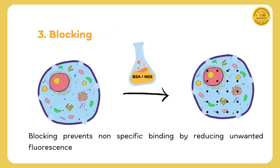Now moving on to blocking. To avoid non-specific binding, we apply a blocking solution containing BSA or normal serum. This step covers any areas that could potentially attract antibodies, ensuring that antibodies bind specifically to the target proteins without interference.